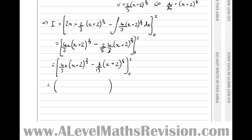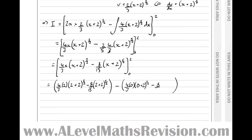Good exam technique: use two big brackets with a minus sign between them and sub both limits. We get: 4 thirds times 2 times (2 plus 2) to the 3 over 2, take 8 fifteenths times (2 plus 2) to the 5 over 2, minus 4 thirds times 0 times (0 plus 2) to the 3 over 2, take 8 fifteenths times (0 plus 2) to the 5 over 2.